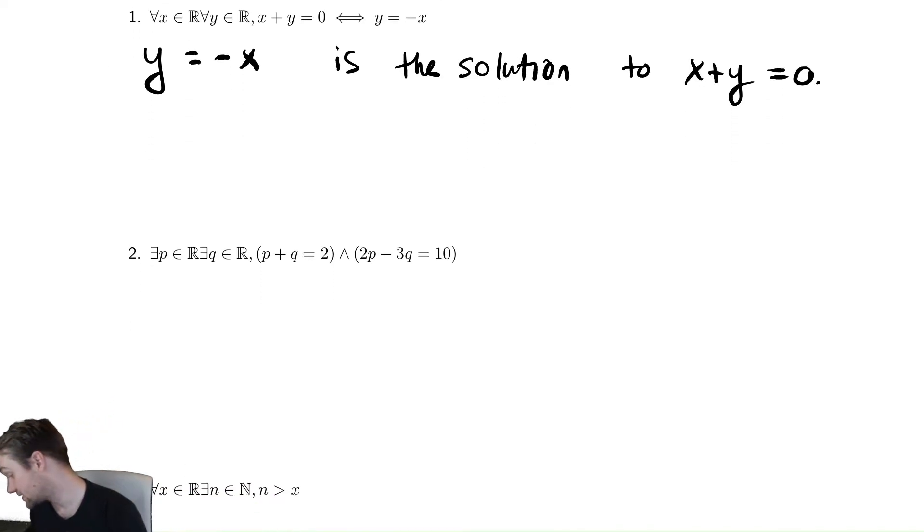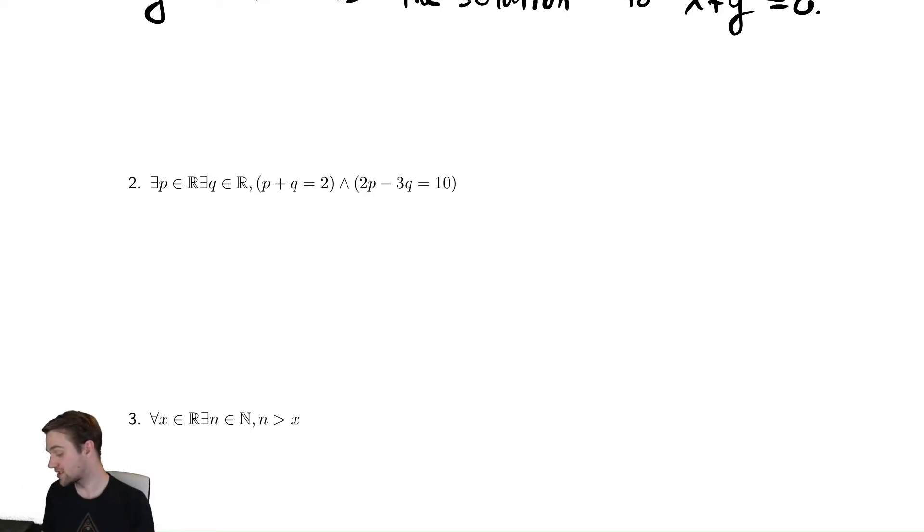The next one says that there exists a p, there exists a q, such that two equations: p plus q equals two, and two p minus q equals ten. So this is saying that there's something that solves both of those equations. This is saying that there is a solution to a system of equations.